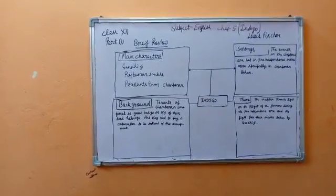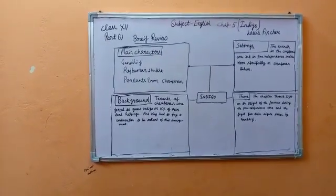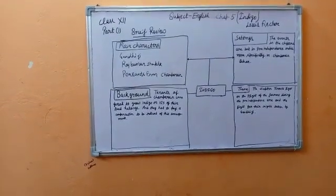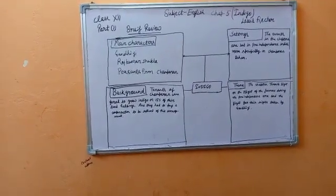Background: Tenants of Champaran were forced to grow indigo on 15% of their land holdings and they had to pay a compensation to be relieved of this arrangement.